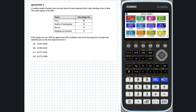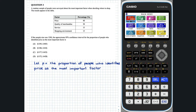Question 3. Let P equal the proportion of people who identified price as the most important factor when deciding where to shop. In a random sample of 1,200 people, 40% claimed that price was the most important. So our sample proportion P-hat is 0.4. We want an approximate 95% confidence interval for the proportion of people who identified price as the most important factor.